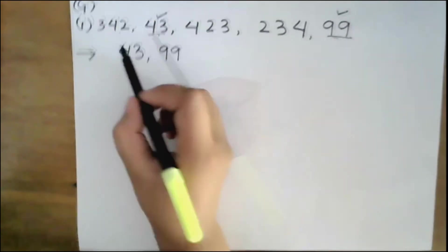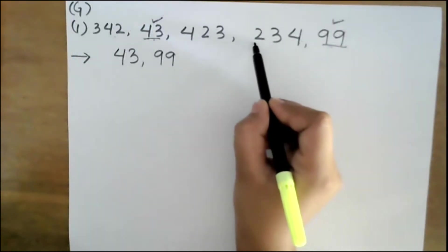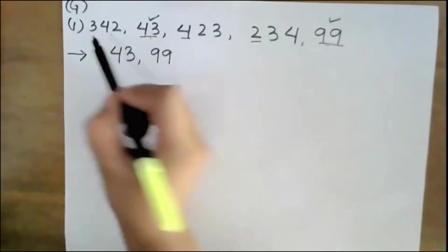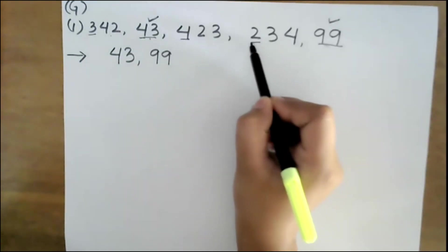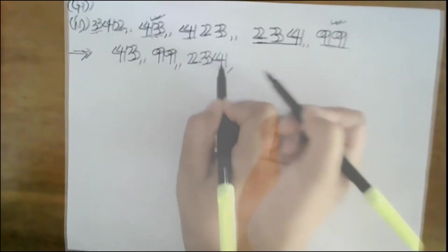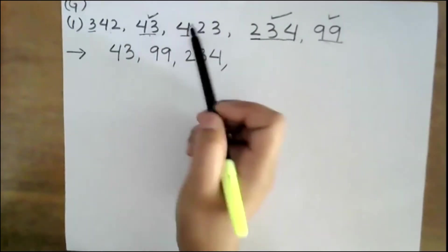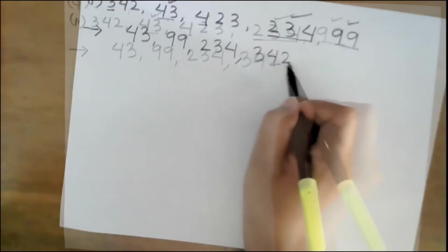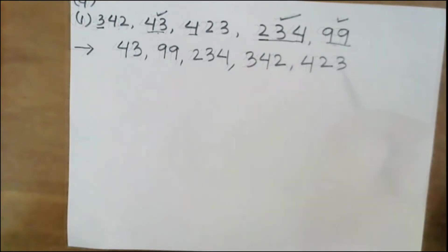For the other three, you look at the hundreds place. The hundreds digit of this number is 2, here is 4, and here is 3. So out of these three, 2 is the smallest — so 234 will be the third number. Then from the remaining two, 342 is smaller, so you write 342 next, and then 423.